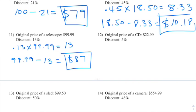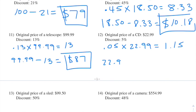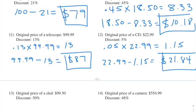Number twelve: the original price of a CD is $22.99 and the discount is 5%. We move the decimal over two places so 0.05 times 22.99. We end up getting $1.15. So we do $22.99 minus $1.15 and we get $21.84. That's our final answer for number twelve.